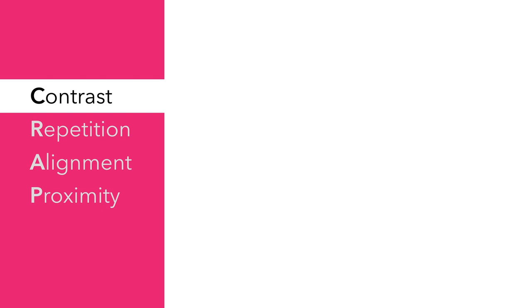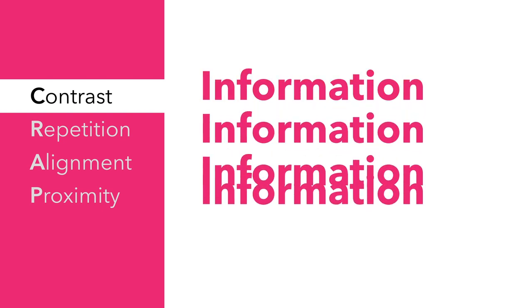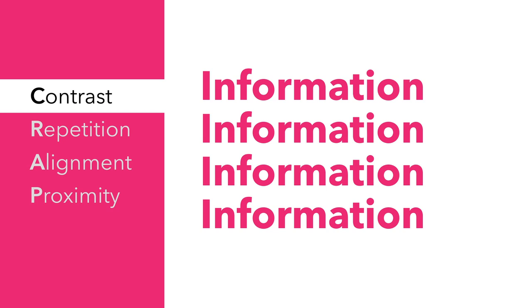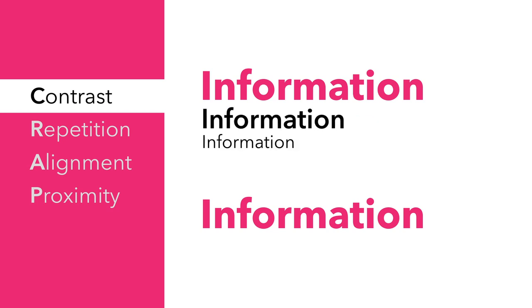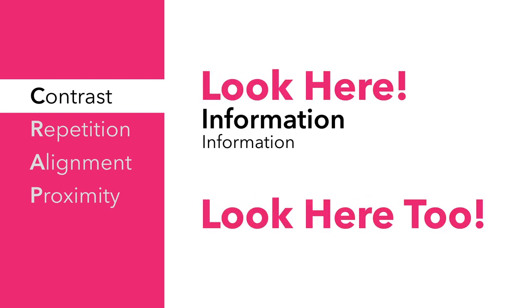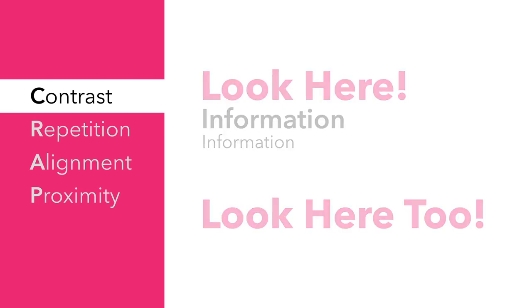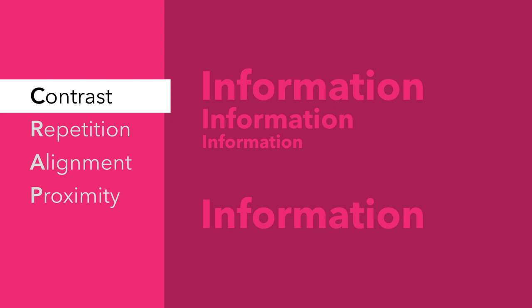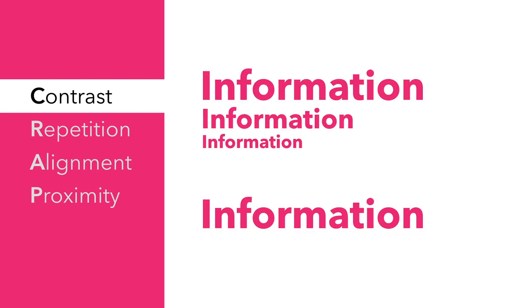Designers rely on contrast to create a hierarchy of information, to let the audience know what's most important. Right now these four pieces of information are not differentiated from each other, but after we make some small adjustments, the information has a clear hierarchy — this leads the eye to prioritize the large pink information over the smaller black information. Contrast is also a function of legibility. Notice how the lack of contrast in color between the background and font makes the text difficult to read; just by changing the background color we can make the information much easier to understand.